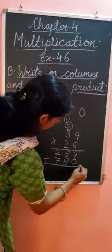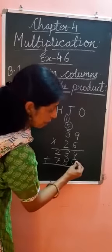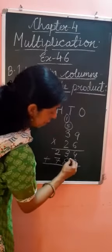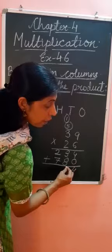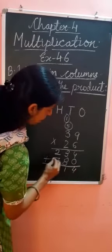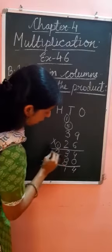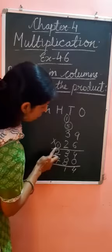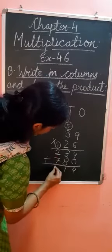Now, we add the product. First, we add ones place, so 4 plus 0, we get 4. Next, we add tens place: 8 plus 3, we get 11. So 1 we write in tens place and 1 carry over in hundreds place. Now, we add hundreds place: 7 plus 2 plus 1, we get 10.